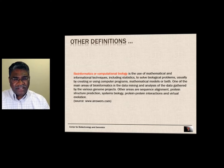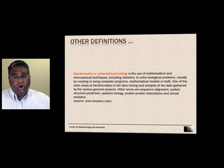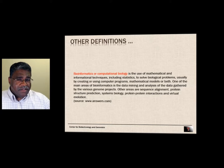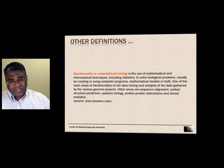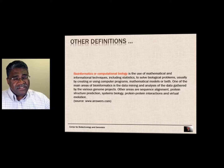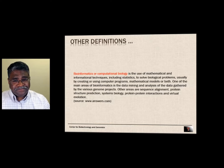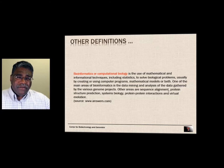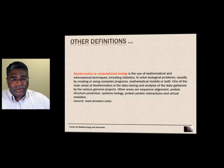Answers.com equates bioinformatics with computational biology — an upcoming module will explore whether they are the same, different, used interchangeably, or synonyms. Bioinformatics is described as the use of mathematical and information techniques, including statistics, to solve biological problems using computer programs and mathematical models. Specific applications mentioned include sequence alignment — something very specific that bioinformatics focused on from the beginning — and the second class is related to sequences.